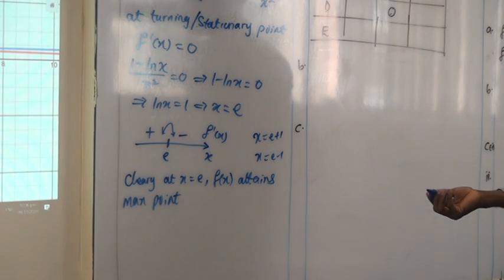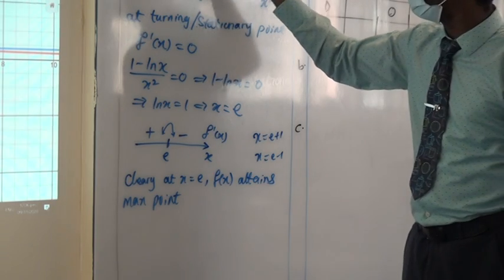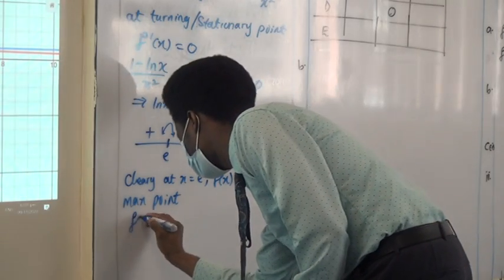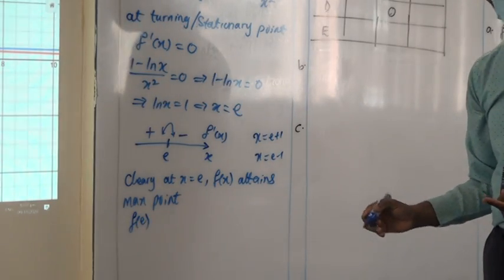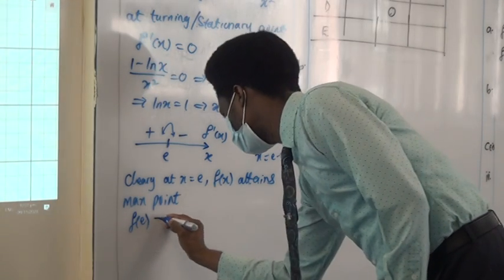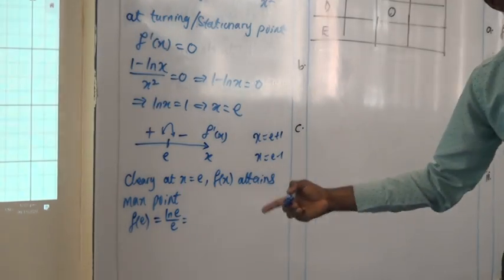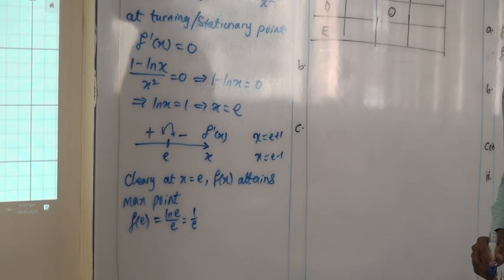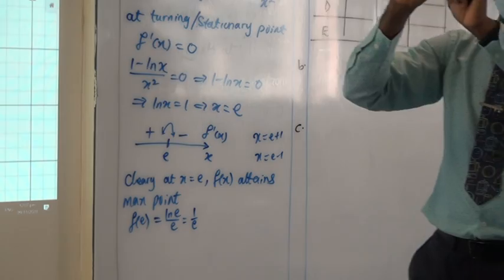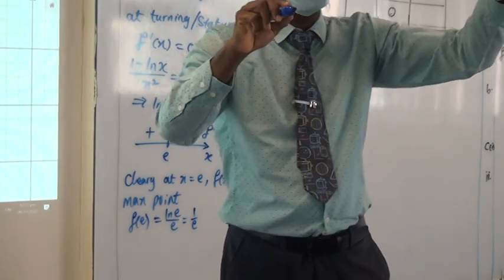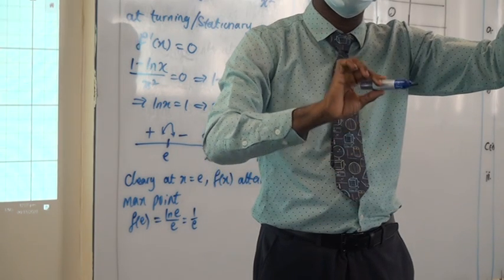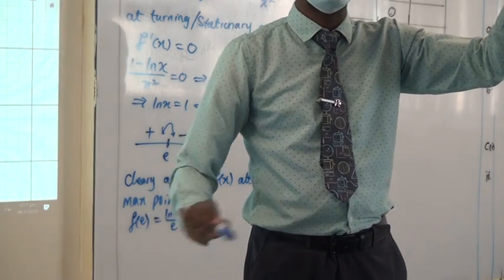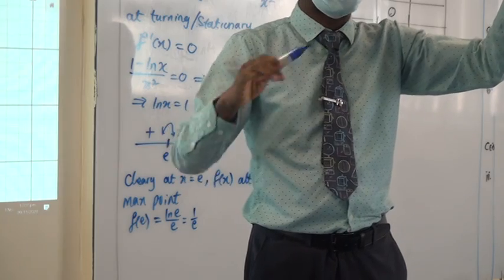So there we find the maximum value. Remember, this is the value of the function, not the value of x. f(e), which is when x is equal to e — we want to know the corresponding y. f(e) will be ln(e) divided by e. The log of the number e to base e is 1, so the value of y at this point is 1 over e. The curve touches that value and goes back down — there is no point on that graph that goes beyond it.